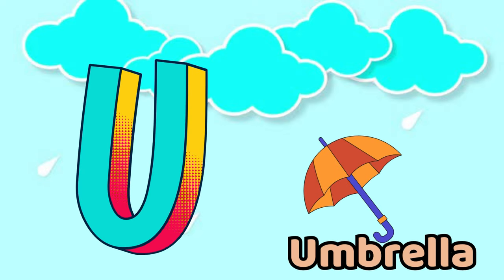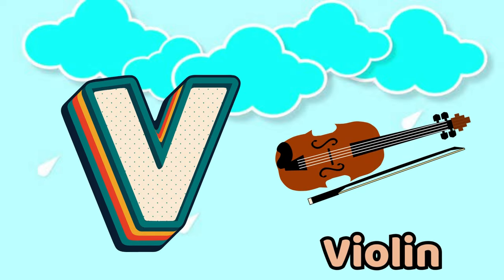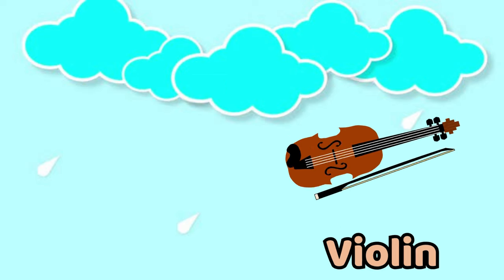U is for Umbrella. U. Umbrella. V is for Violin. V. Violin.